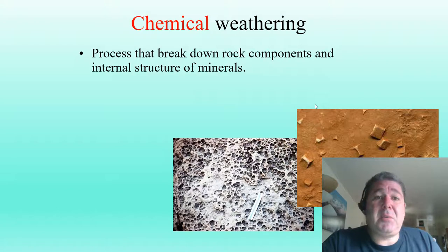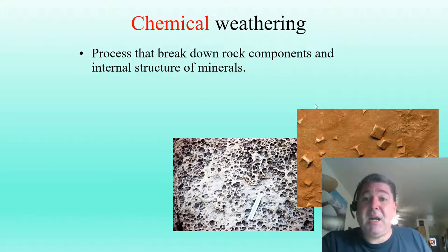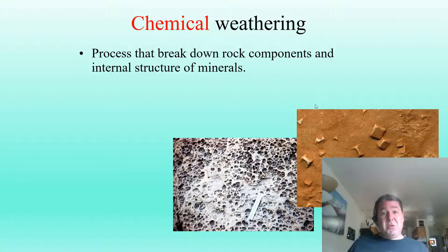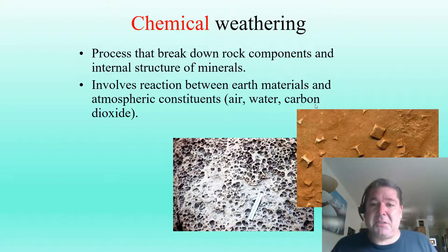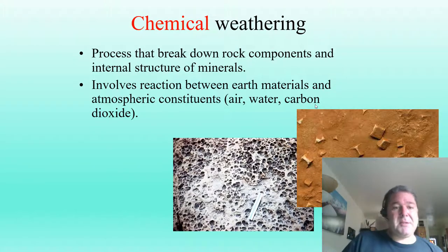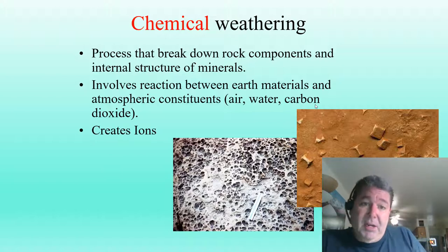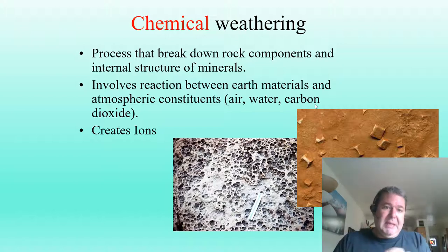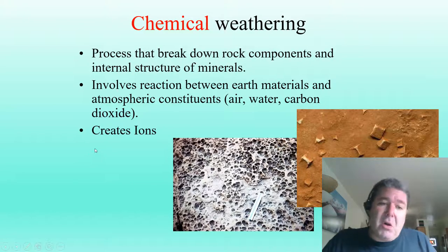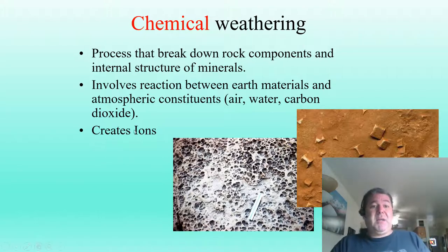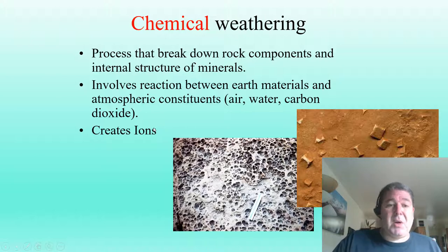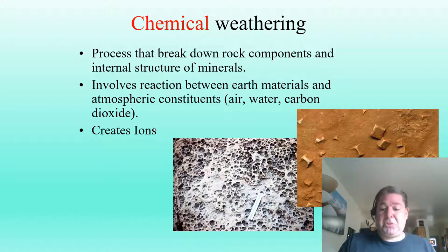Chemical weathering, on the other hand, is the process that breaks down rock into its elemental components, essentially breaking down the internal structure of minerals through chemical reactions between air, water, carbon dioxide, acids, and whatever else is in contact with that rock. This creates ions — those ions that got together to make minerals are now being broken back apart chemically, releasing ions. But importantly, we're also releasing altered mineral products — our clays. This is where we get our clays and very fine-grade mud. So chemical weathering creates ions important for chemical sedimentary rock formation, and also creates altered mineral products — clays — which are clastic or detrital sedimentary rocks.